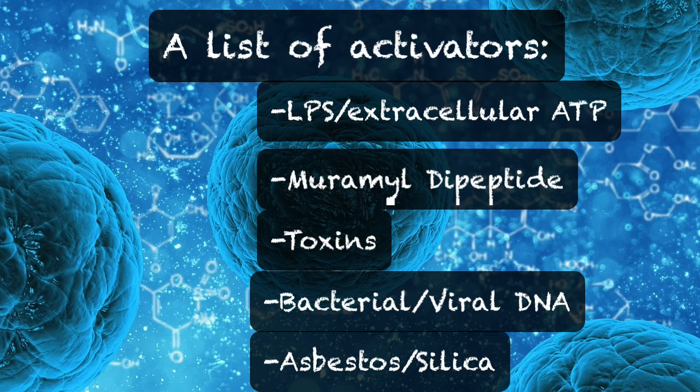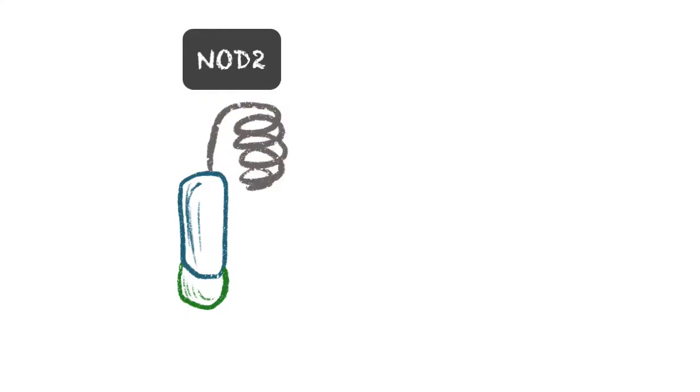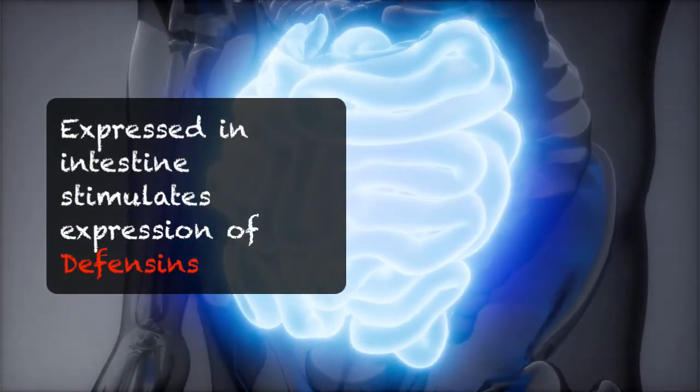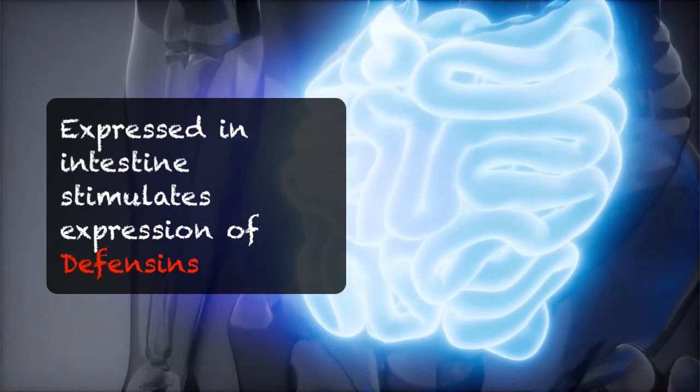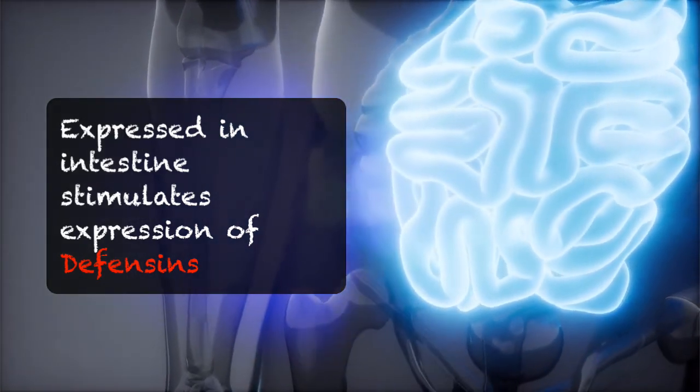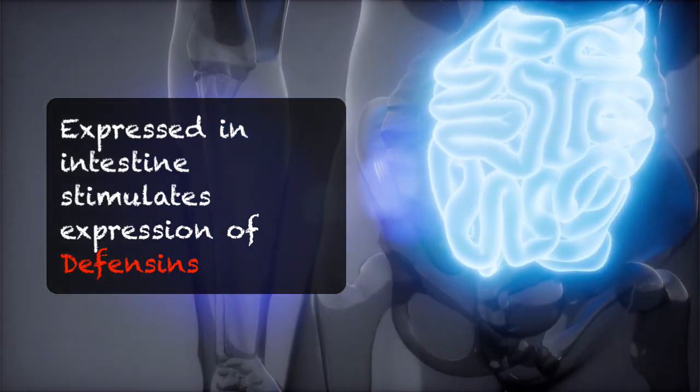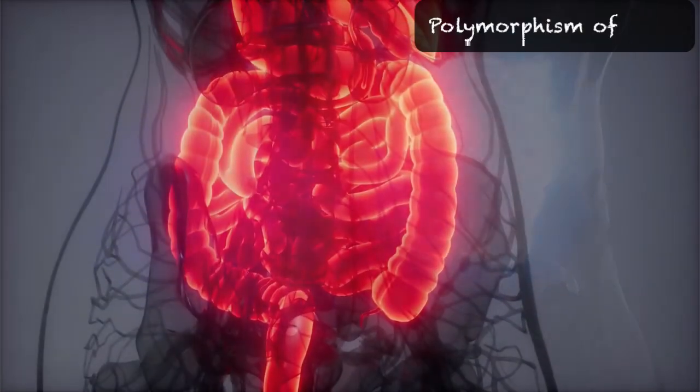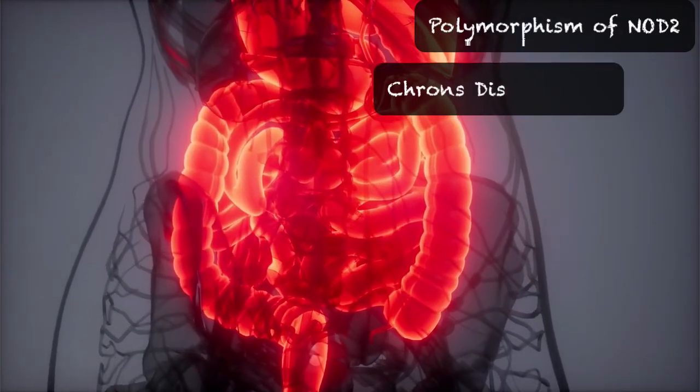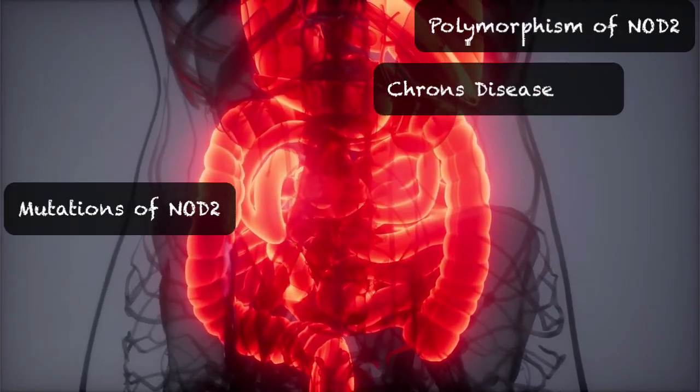They do help the innate immune system, especially in response to pathogens like H. pylori and listeria. The NOD2 receptor is expressed in the intestines, which then stimulates the expression of defensins, which is nice for us. But these NOD-like receptors can also do a lot of harm. NOD1 polymorphism is linked to Crohn's disease, while mutations of NOD2 can lead to massive systemic inflammation.